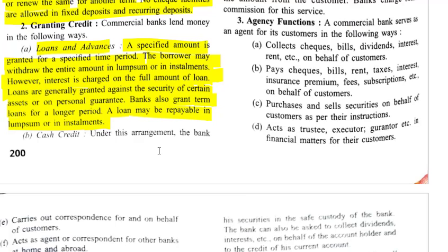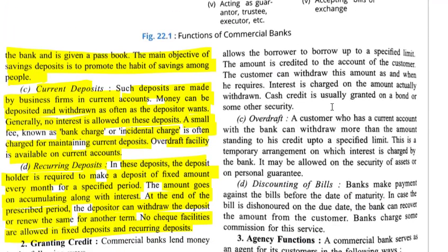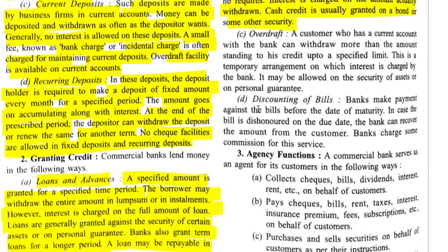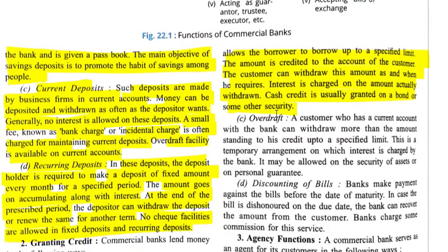The second method of granting credit is cash credit. Under this arrangement, the bank allows the borrower to borrow up to a specified limit. The amount is credited to the account of the customer, who can withdraw it as and when required. Interest is charged only on the amount actually withdrawn. Cash credit is usually granted on a bond or some other security.